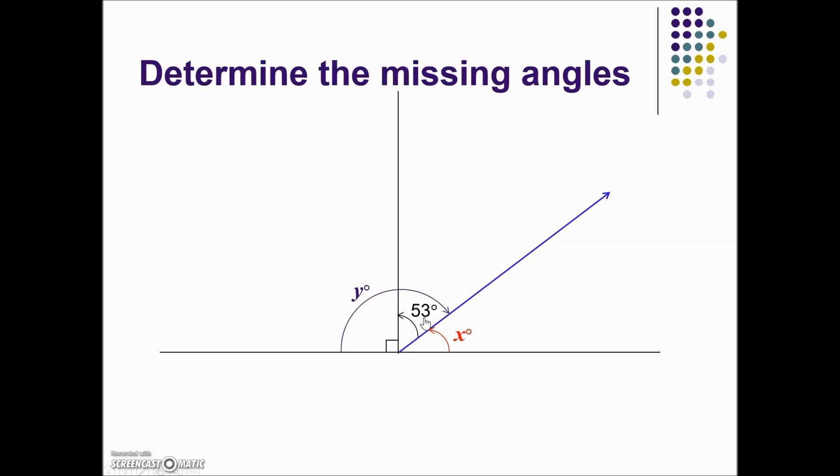The acute angle which has a measure of 53 plus x are complementary angles indicated here with the yellow lines. That means they add up to be 90 degrees and solving for the missing angle, angle x, we'll subtract 53 from 90 to give us a measure of 37 degrees.